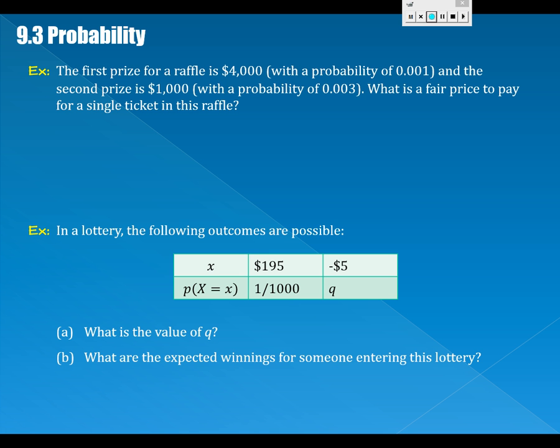You've got to have the raffle in here. The first prize for a raffle is $4,000 with a probability of 0.001, and the second prize is $1,000 with a probability of 0.003. What is a fair price to pay for a single ticket in this raffle? How does this follow from the previous thing? I guess we need to know what fair means. Fair for us will mean, in the game theory sense, zero sum for both the sellers and buyers of the tickets in the long run.